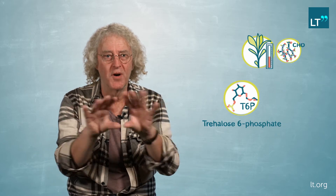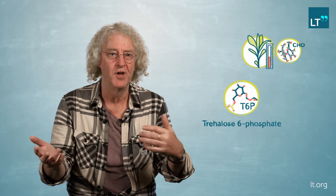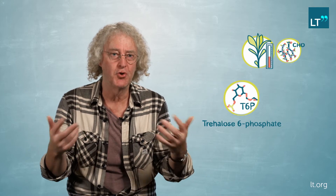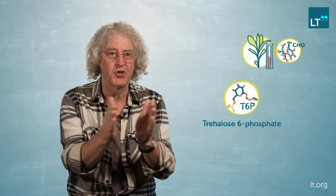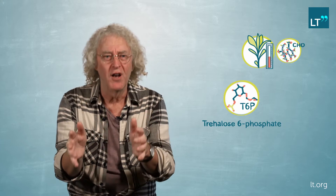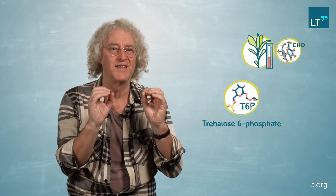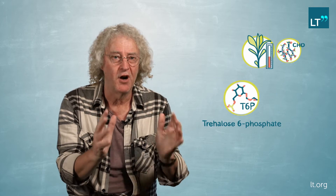Trehalose is a sugar, like sucrose, and it's found in bacteria, fungi and lower animals where it's transported, stored and acts as a stress metabolite. Trehalose-6-phosphate is an intermediate in its synthesis. In plants, trehalose is not very important anymore, but trehalose-6-phosphate has taken on a fundamental and major role as a sensor of sugars and carbohydrates. That is why we've decided to focus on trehalose-6-phosphate.